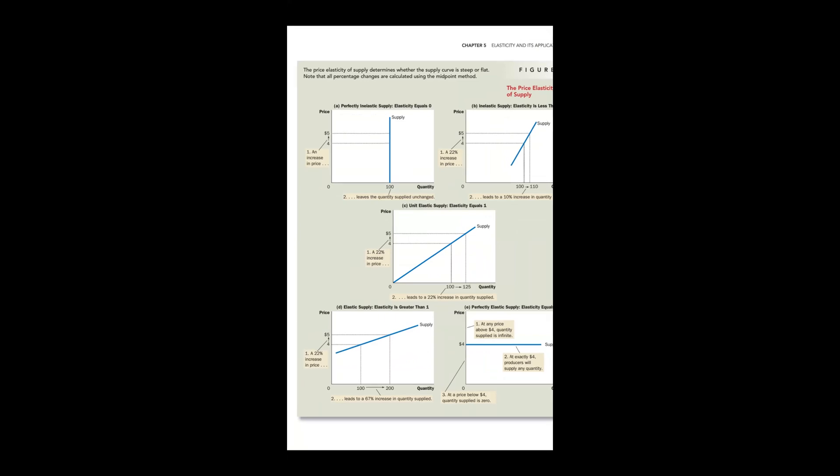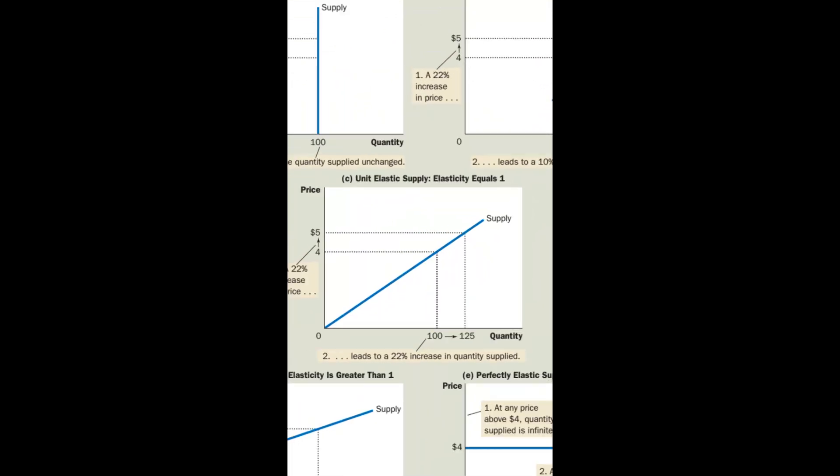The supply curve is an upward-sloping curve. In elastic supply, when the price increases by one unit, the quantity supplied changes significantly. When you draw the supply curve in a flatter form, it means the price changed slightly but the quantity supplied changed a lot — the supply is more flexible with the price. This is called elastic supply.